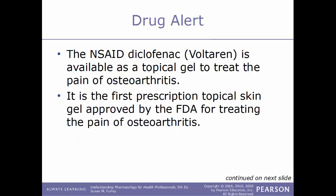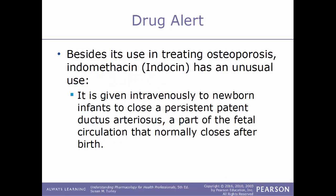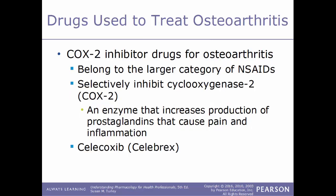Drug alert: the NSAID diclofenac is available as a topical gel to treat the pain of osteoarthritis — this was the first prescription topical skin gel approved for treating osteoarthritis pain. Another drug alert regarding indomethacin: besides its use in treating osteoarthritis, it has an unusual use — it is given intravenously to newborn infants to close a persistent patent ductus arteriosus. This structure is found only in the developing fetus and should normally close once the baby is born, but when it does not, it must be corrected through medications, surgery, or both.